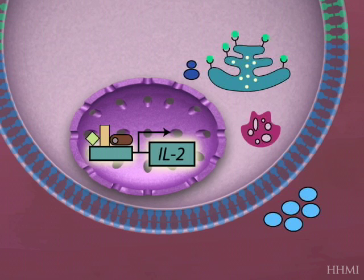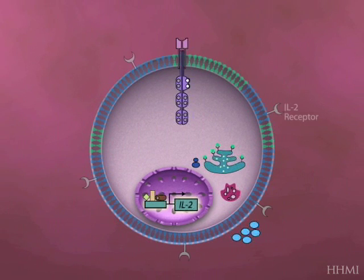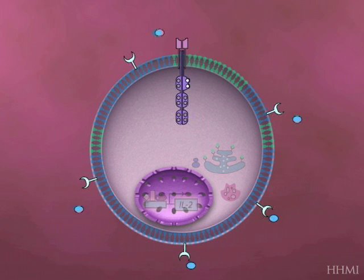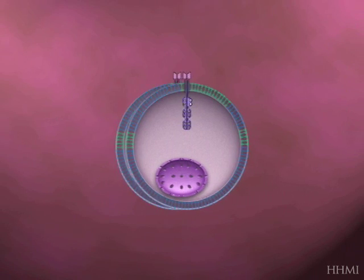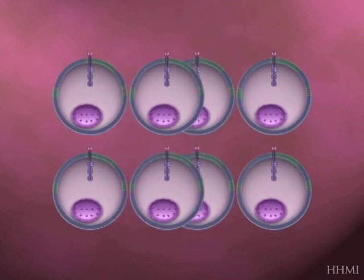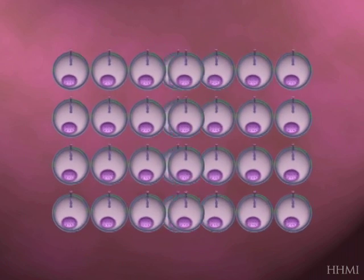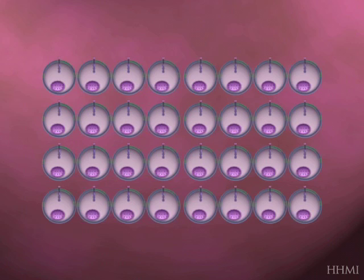Following T cell activation, the cell doesn't only produce IL-2 but also makes IL-2 receptors on the cell surface. These high-affinity IL-2 receptors then bind IL-2, which signals through other pathways to induce the cell to proliferate and differentiate. The end result is that this initial single cell with antigen specificity against a particular viral protein will, over several days, multiply.